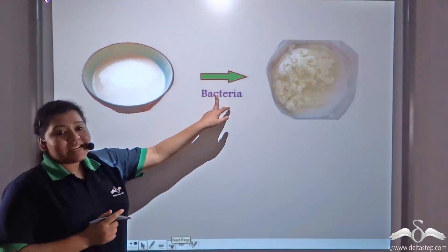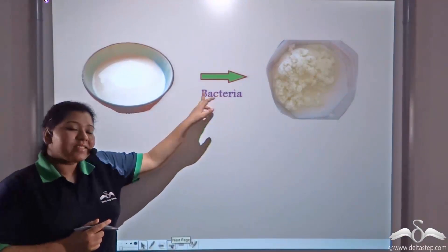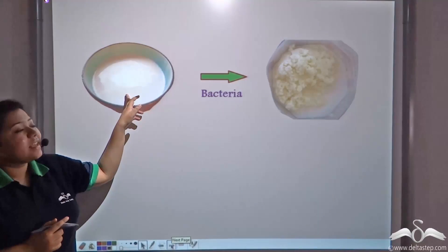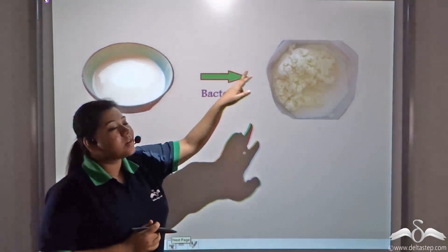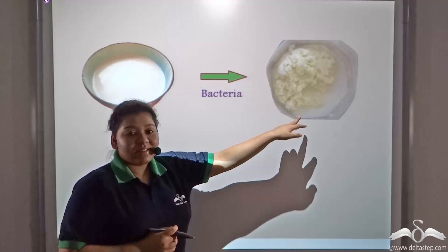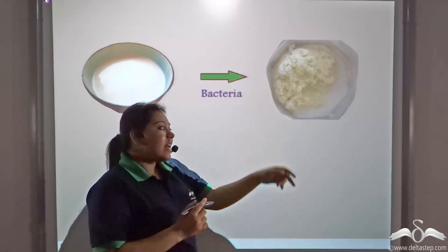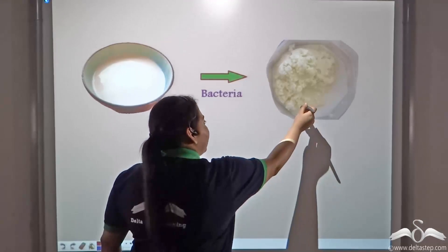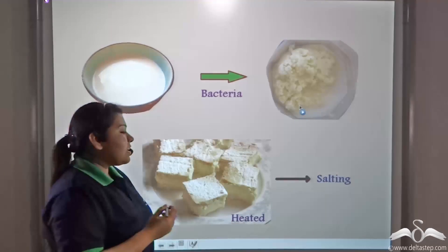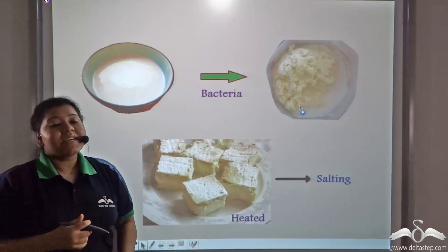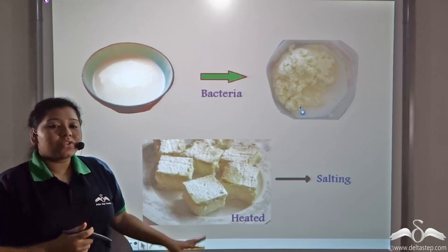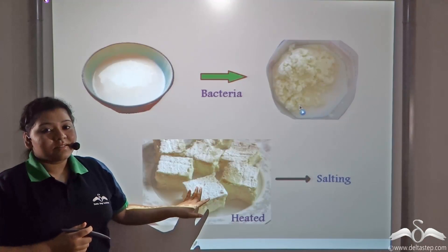Firstly, bacteria acts upon milk and converts it into curd. After that, the curd is heated and then a lot of salt is added to the curd.